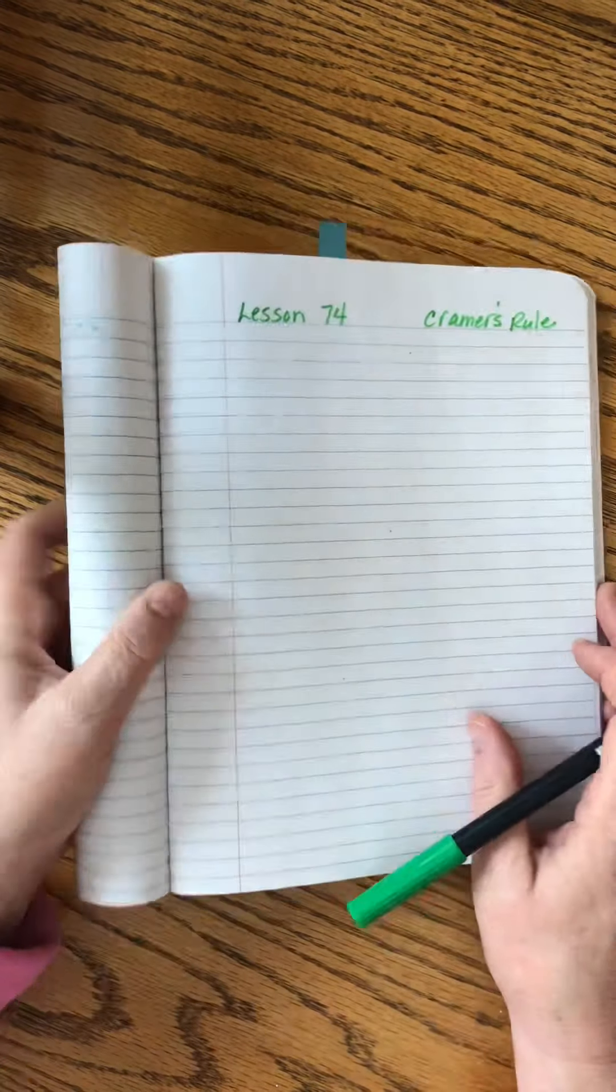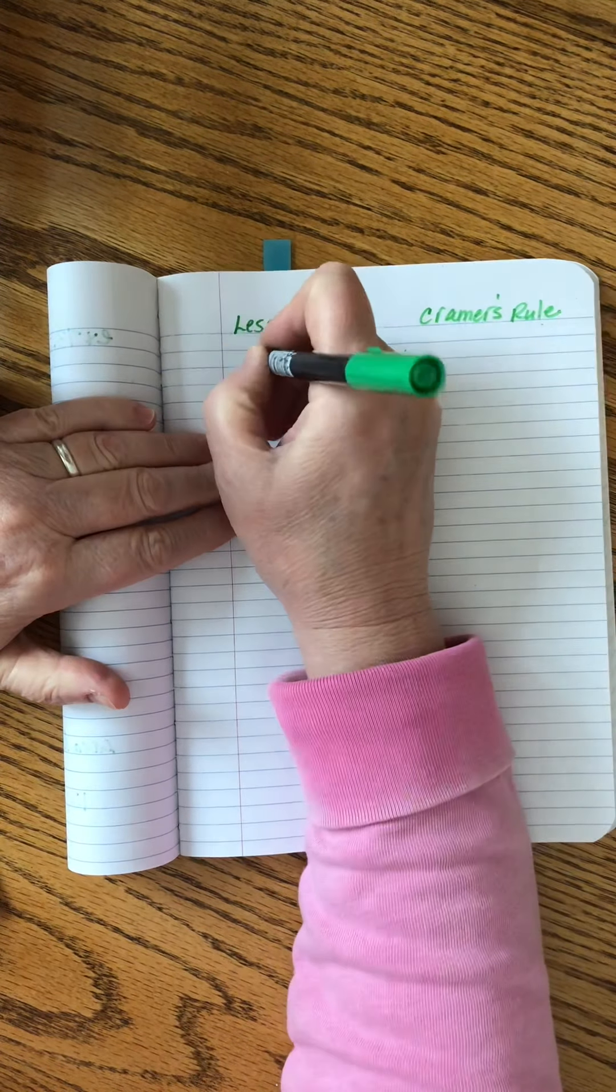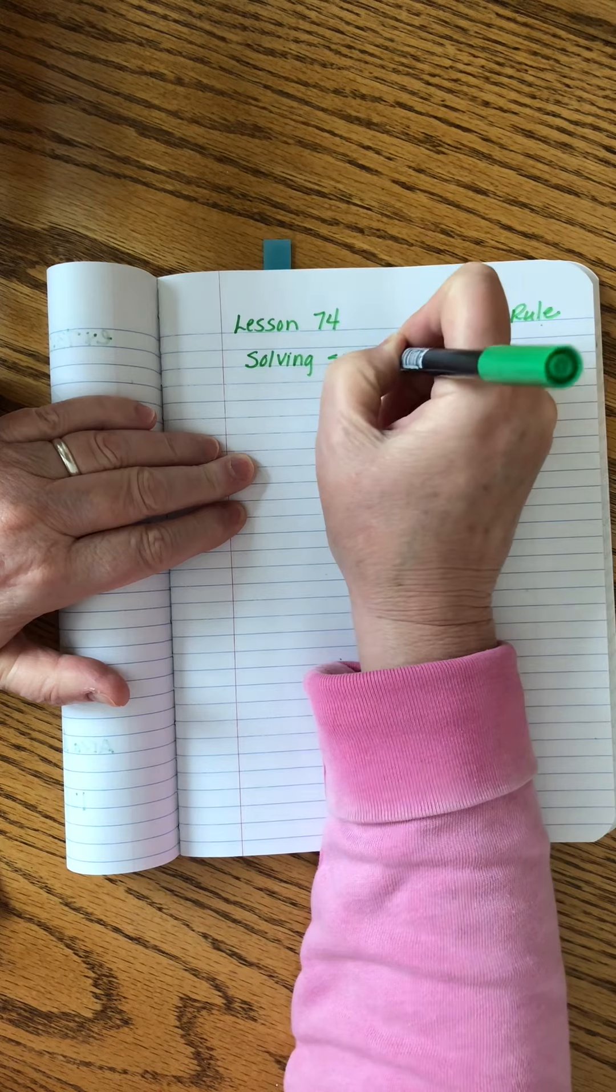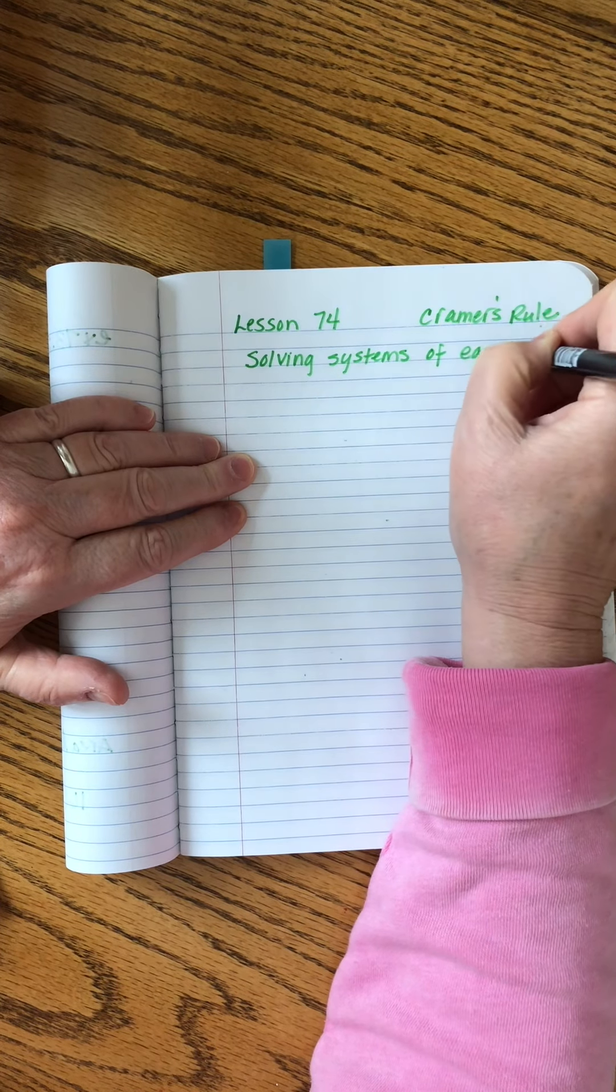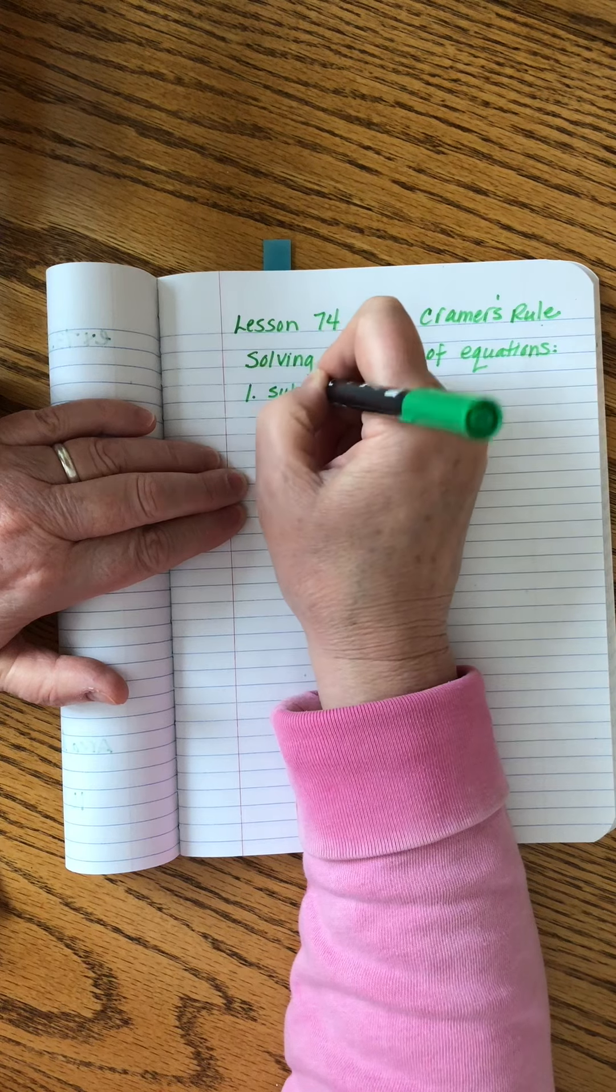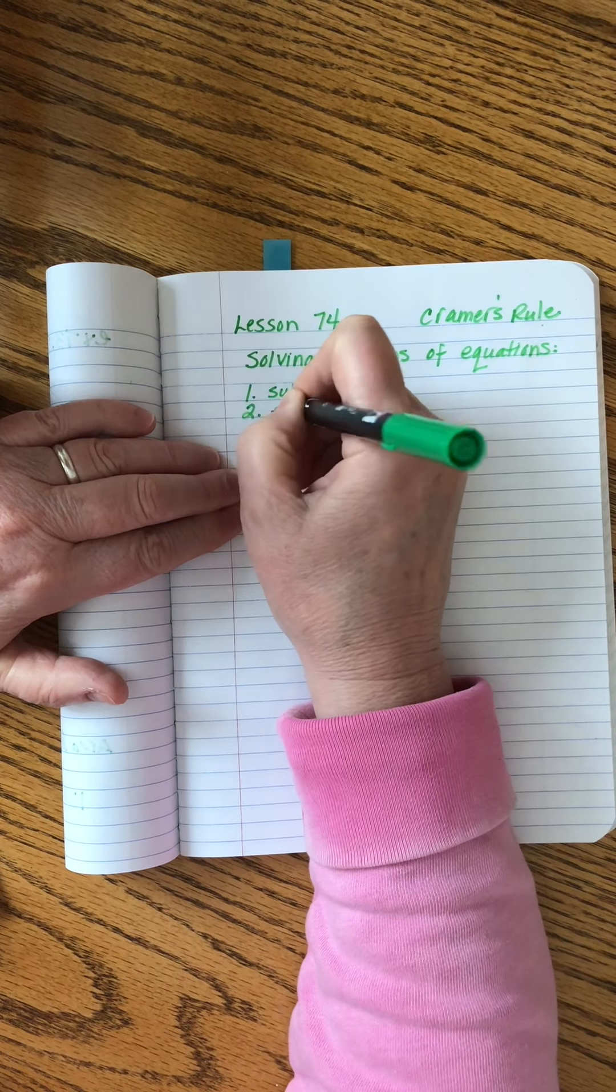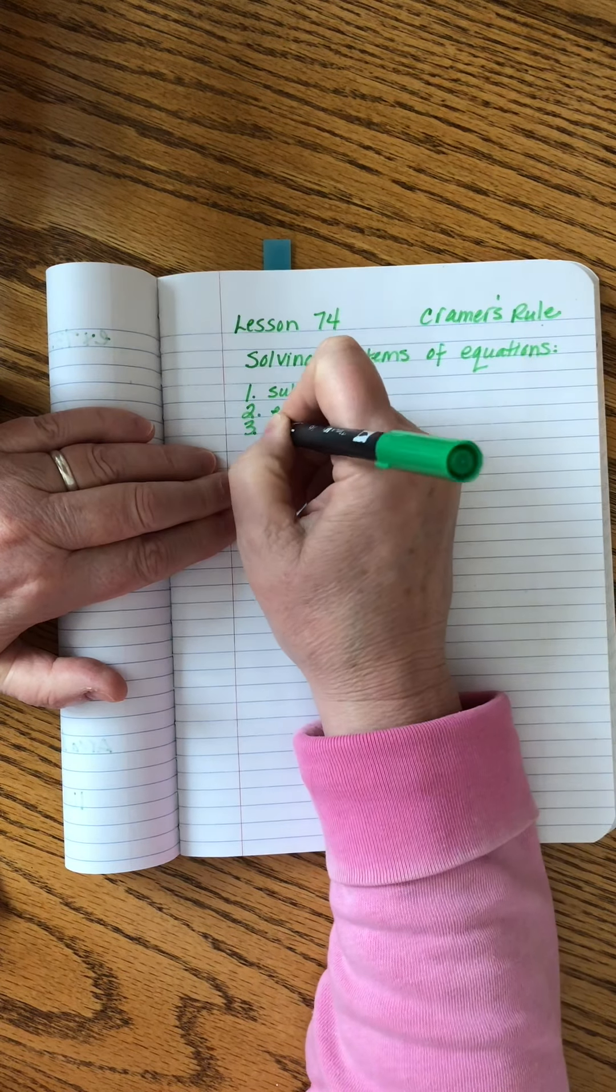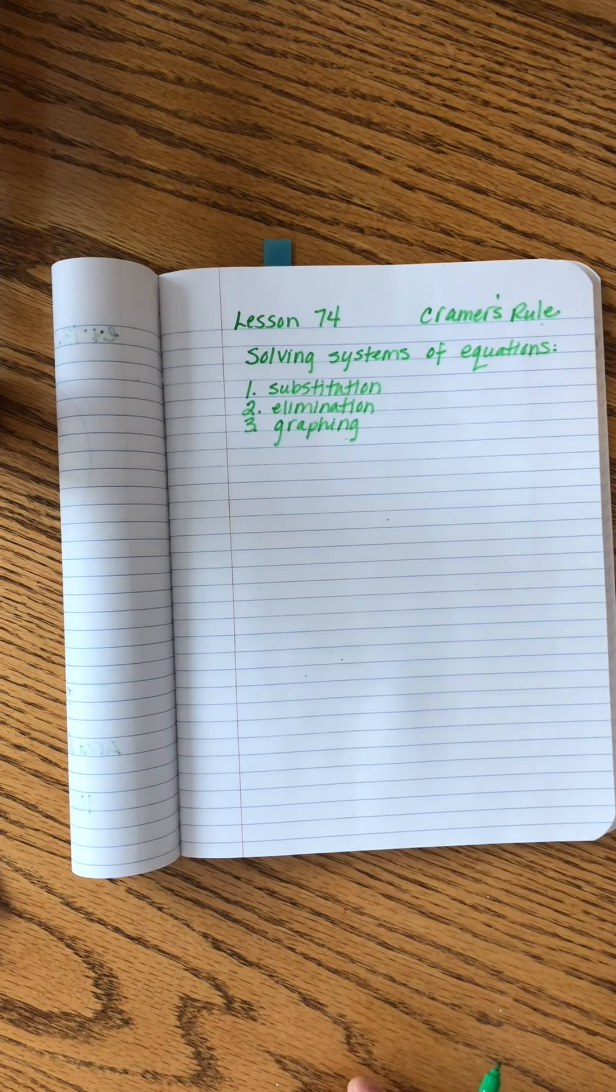Okay, let's talk about Kramer's rule. We have been talking about solving systems of equations for quite some time now since algebra 1. I didn't even work with any of you guys for algebra 1, so we did this separately. The first thing I think you learned was substitution.